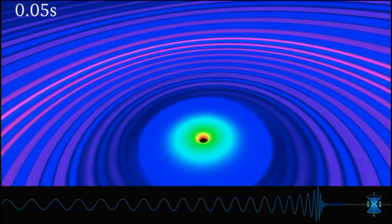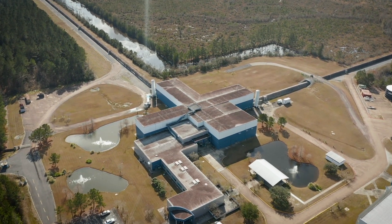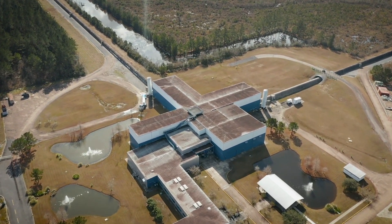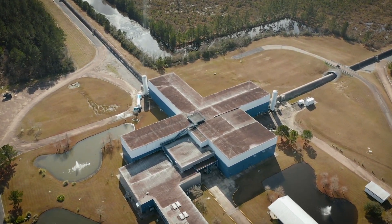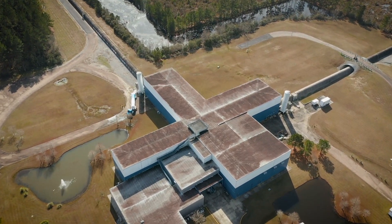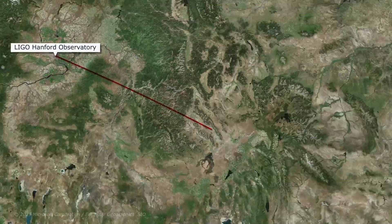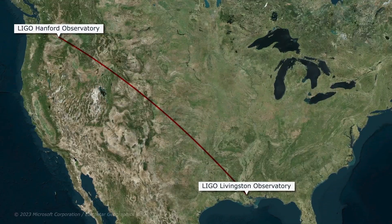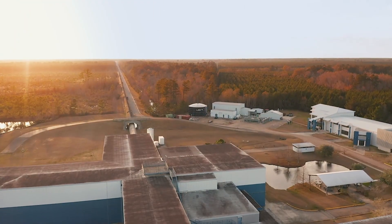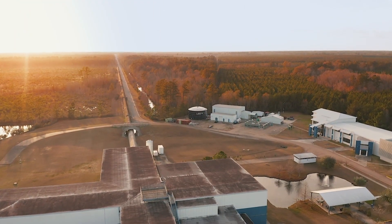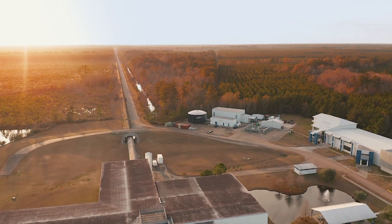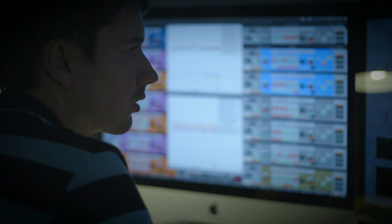The first time I heard about LIGO, my reaction is, this is crazy, it will never work. It cost more than a billion dollars to build and operate the dual detectors, located 2,000 miles apart, one in Washington State, the other in Louisiana.